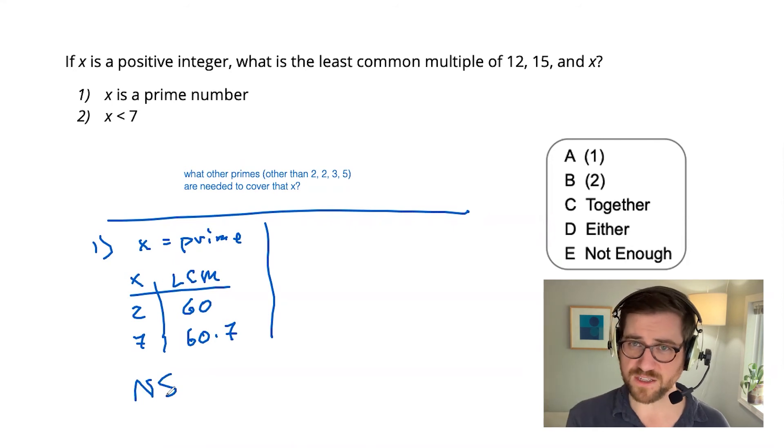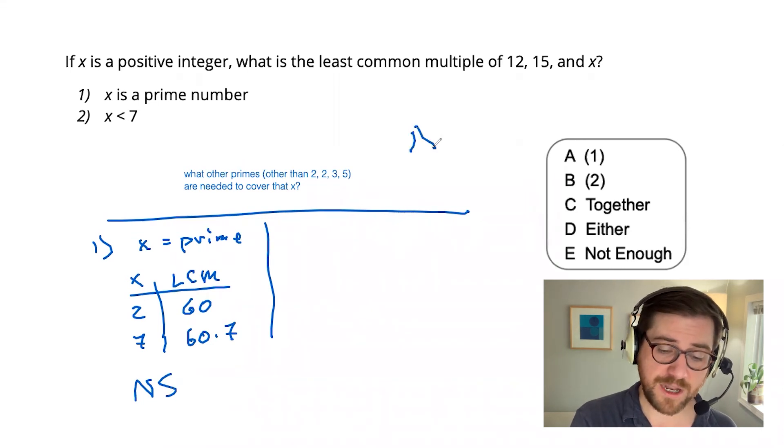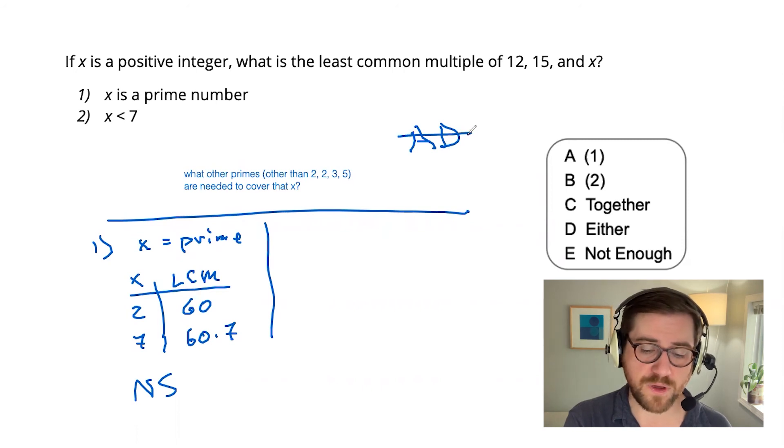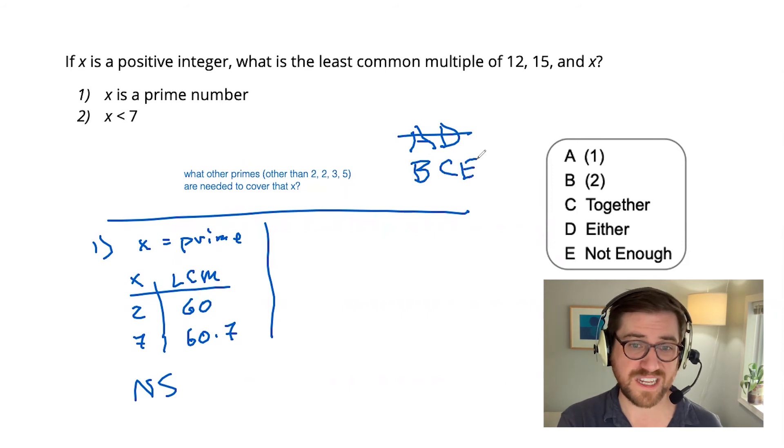Pause the video for a sec. If you're new to data sufficiency, ask yourself which choices are now eliminated. Did you get A? That's eliminated. And D is also eliminated. We know that it's not the case that both statements are sufficient on their own, since one is already not sufficient on its own. So A and D can both go. This handy little trick for writing the answer choices we call the data sufficiency elimination grid. It's a nice way to keep track of things.